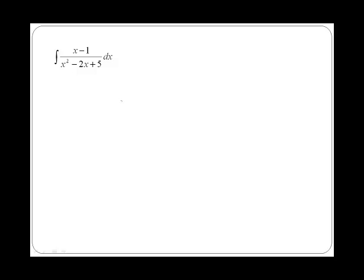What about the integral of x minus 1 over x squared minus 2x plus 5? In this case, we also have the integral of a fraction. Therefore, a quick check to know if substitution can be applied would be to look at the bottom function, which is x squared minus 2x plus 5, and then look at the top of that fraction and ask yourself: is that the derivative of the bottom function? If we differentiate x squared minus 2x plus 5, the derivative is 2x minus 2, which is a multiple of the function on top. As if you multiply x minus 1 by 2, you will get 2x minus 2. Therefore, we can apply substitution in this case.